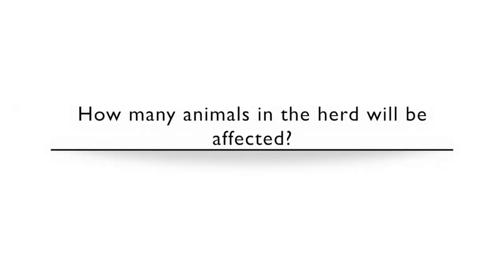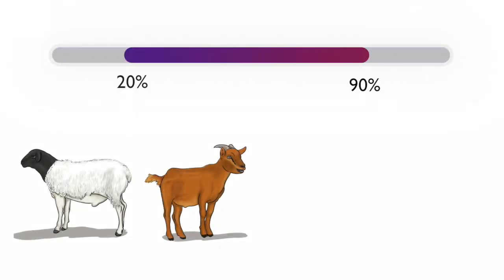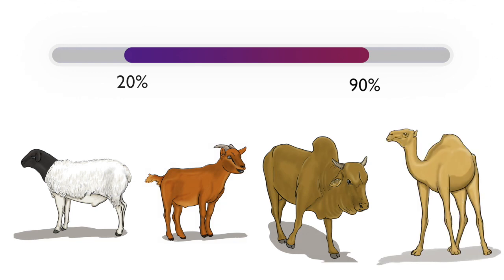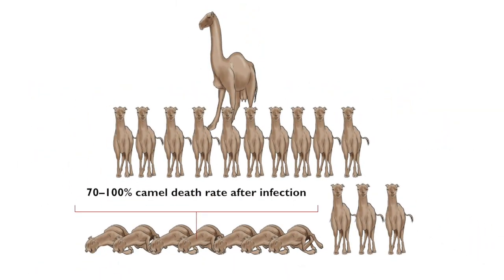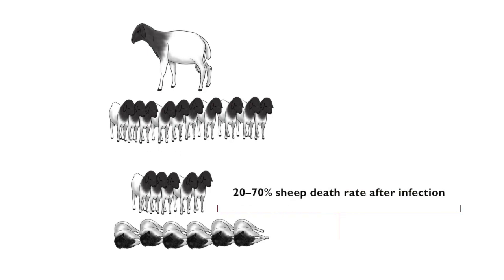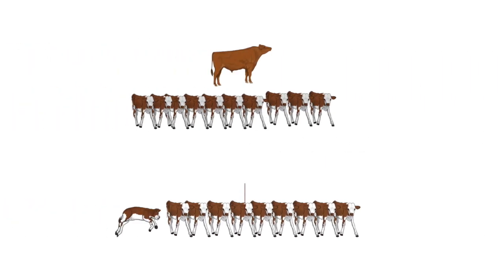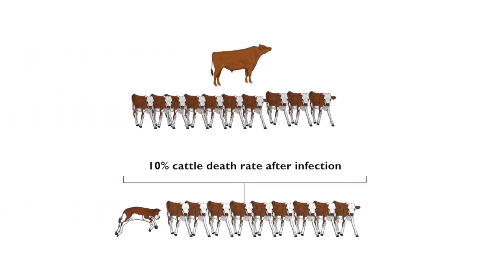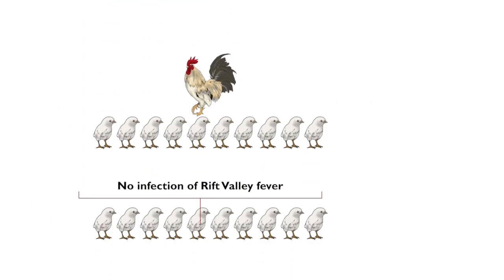How many animals in the herd will be affected? About 20 to 90 percent of sheep, goats, cattle, and camels in entire herds may be affected by the disease during outbreaks. Young animals are extremely susceptible, with 70 to 100 percent of lambs and camel foals succumbing to the disease. Sheep are highly susceptible, and about 20 to 70 percent of them die when infected. Cattle and humans are moderately susceptible, and less than 10 percent die when affected. Donkeys are resistant, while birds are not susceptible.